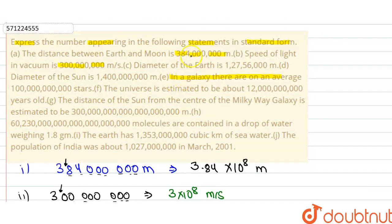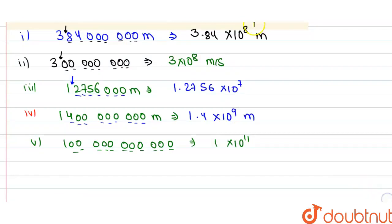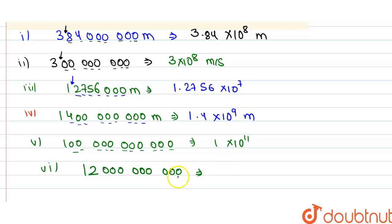Now the next statement: the universe is estimated to be about 12,000,000,000 years old. This number can be written in standard form by counting the digits: 1, 2, 3, 4, 5, 6, 7, 8, 9, and 10. So we can write 1.2 × 10¹⁰. After the decimal, we have only one non-zero digit, which is 2.